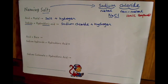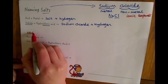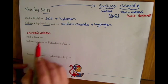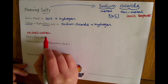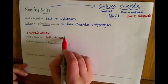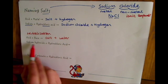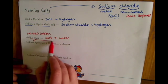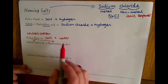Now the other way that we can make salts is by the neutralization reaction, whereby you react an acid and a base to make a salt and water. So in this example you've got a base here and an acid over here.